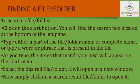Finding a file or a folder: the search box offers the most direct way to locate a file. Follow these steps to search a file or a folder: click on the start button, you will find the search box located at the bottom of the left pane. Type either a part of the file or folder name, or the complete name, or type a word or phrase that is present in the file. As you type, items that match your text will appear on the start menu. Select the desired file or folder and it will open in a new window.